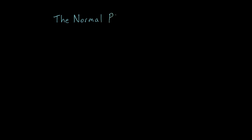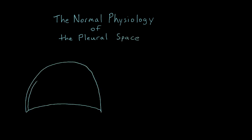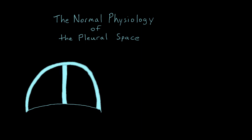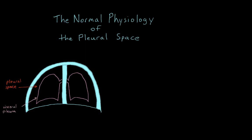Before we begin any discussion of chest tubes, it's important to have a basic understanding of the normal physiology of the pleural space. We'll start off by drawing a schematic diagram of the right and left hemithorax. We won't worry about the contents of the mediastinum in this diagram. The pleural space is the area between the visceral pleura, which lines the lung parenchyma, and the parietal pleura, which lines the inner surface of the chest wall. The pleural space is normally a potential space, with lung parenchyma directly apposed to the chest wall, separated only by a thin layer of pleural fluid, but I've exaggerated this space here in this conceptual drawing so that it's easier to appreciate.